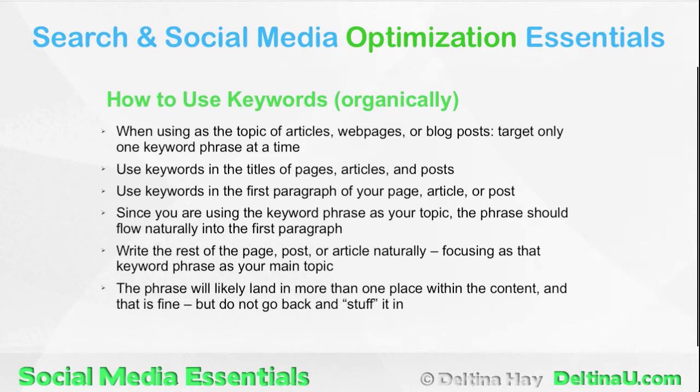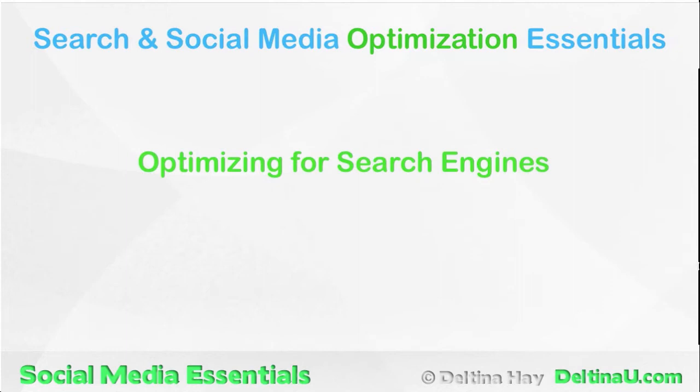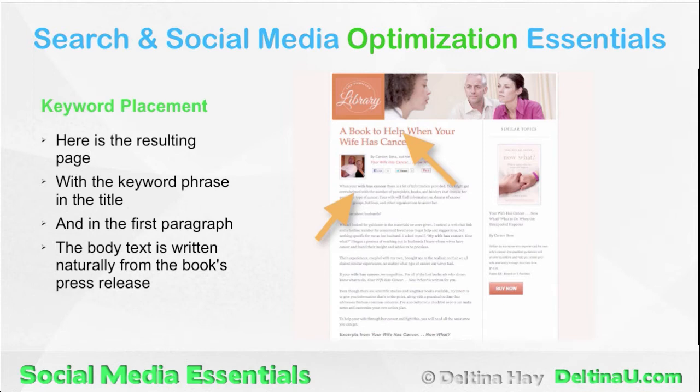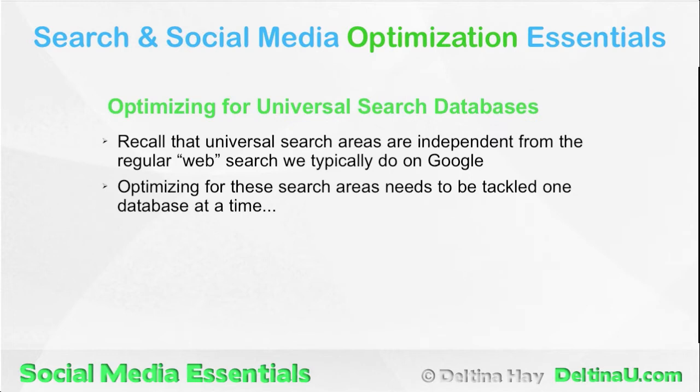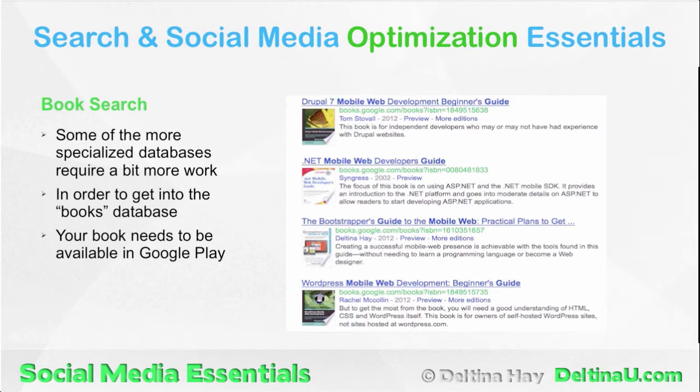We are now ready to dig into optimizing for search. Beginning with search engines, we focus on optimizing content like how to place keywords in web pages, optimizing images, and optimizing outgoing links. We look at how to optimize content for universal search, including image search, video search, book search, news search, and more.